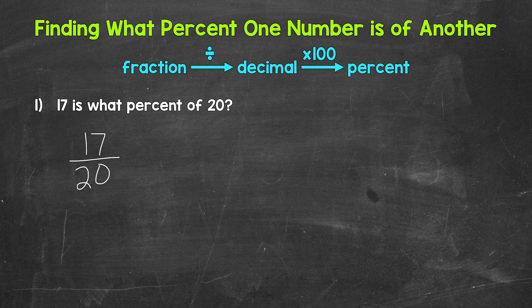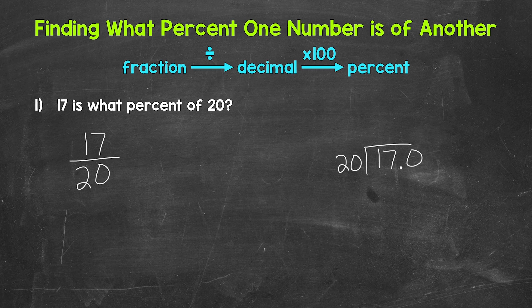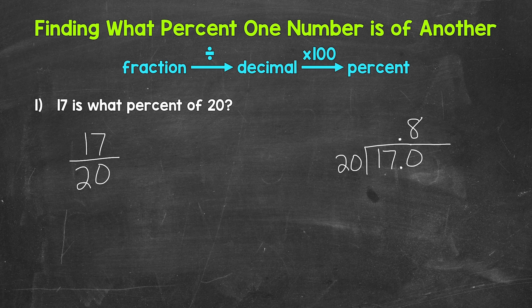Let's do this division by hand. So 17 divided by 20 — how many whole groups of 20 in 17? We can't do that, so we need a decimal and a zero. Once we have the decimal and the zero, we bring the decimal straight up into where the quotient will be, and extend the division bar. Now we can think of this as 170 divided by 20. How many groups of 20 in 170? That's 8, which gets us to 160. We put the 8 above the zero since we used that zero. Multiply: 8 times 20 is 160. Subtract: 170 minus 160 is 10.